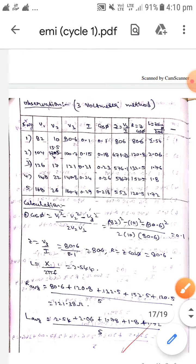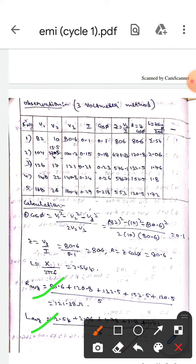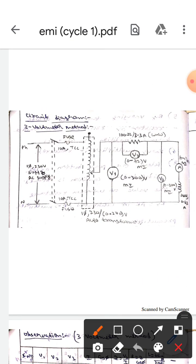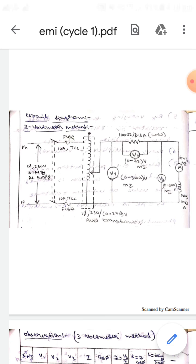And after this we will take the R average and L average. In this way we will do the experiment of finding the choke coil parameters by using three volt meter method. I hope you understand guys, thank you.